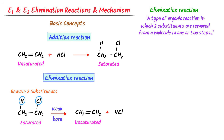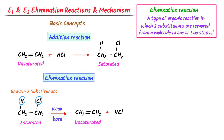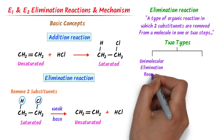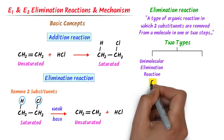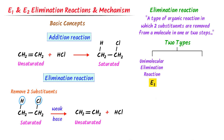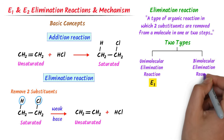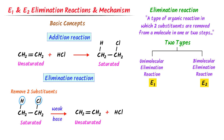We define elimination reaction as a type of organic reaction in which two substituents are removed from a molecule in one or two steps. Remember that there are two types of elimination reactions: elimination of unimolecular reaction, which we call E1 elimination reaction, and elimination of bimolecular reaction, which we call E2 reaction.